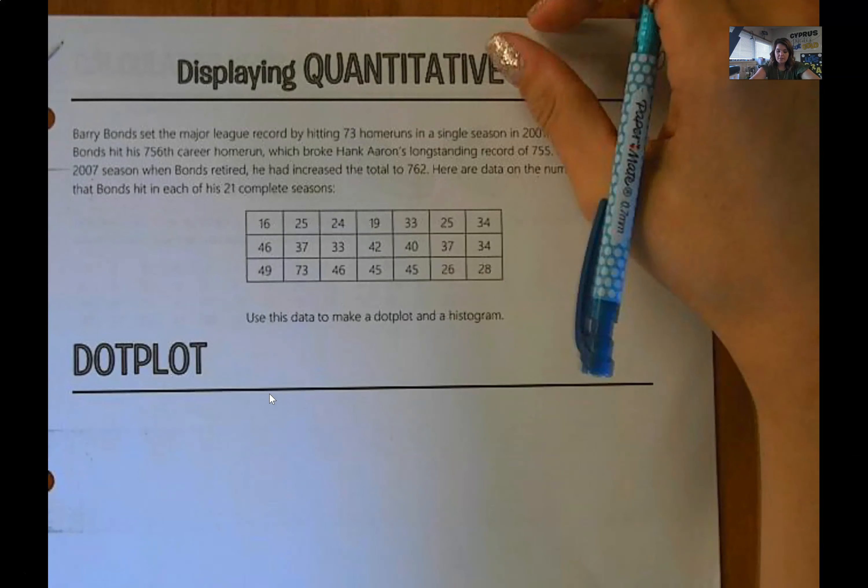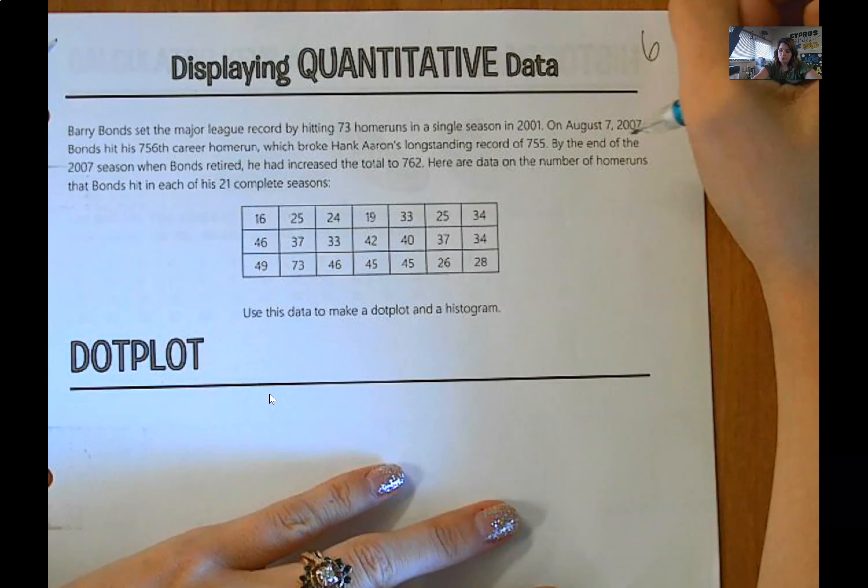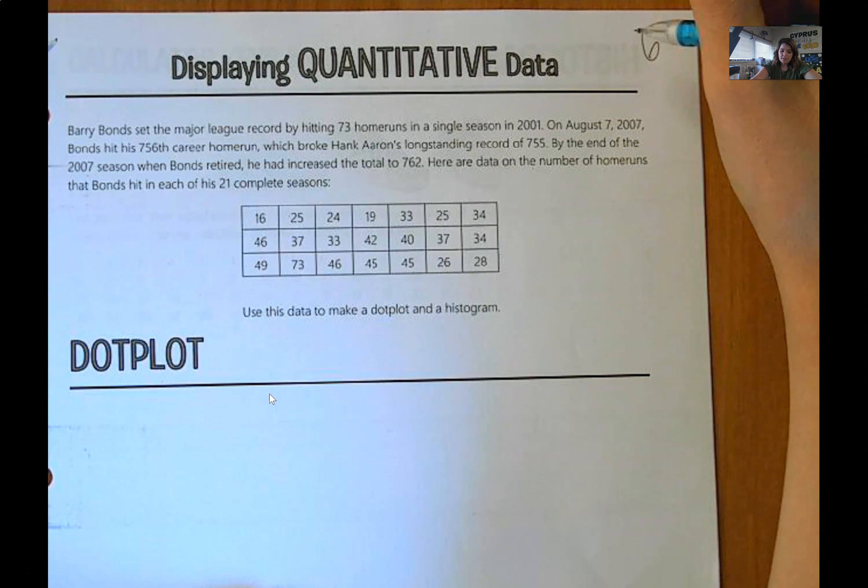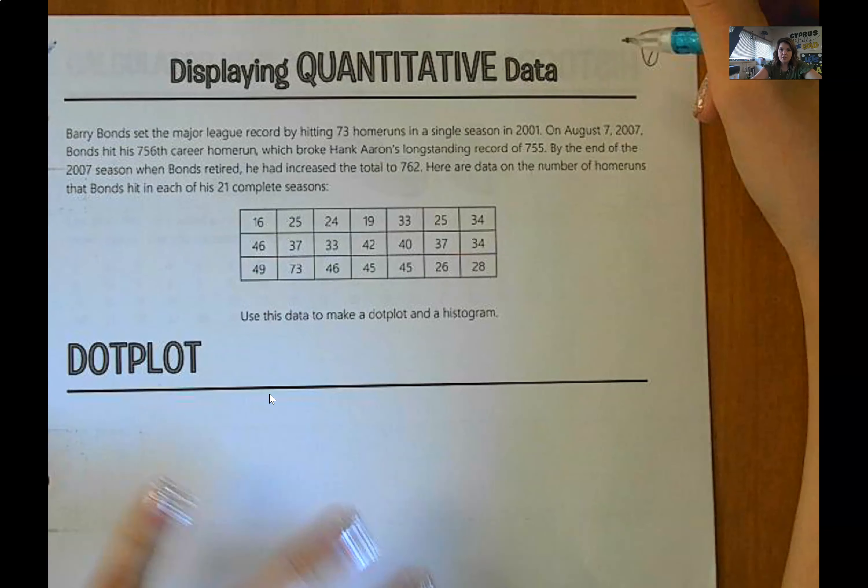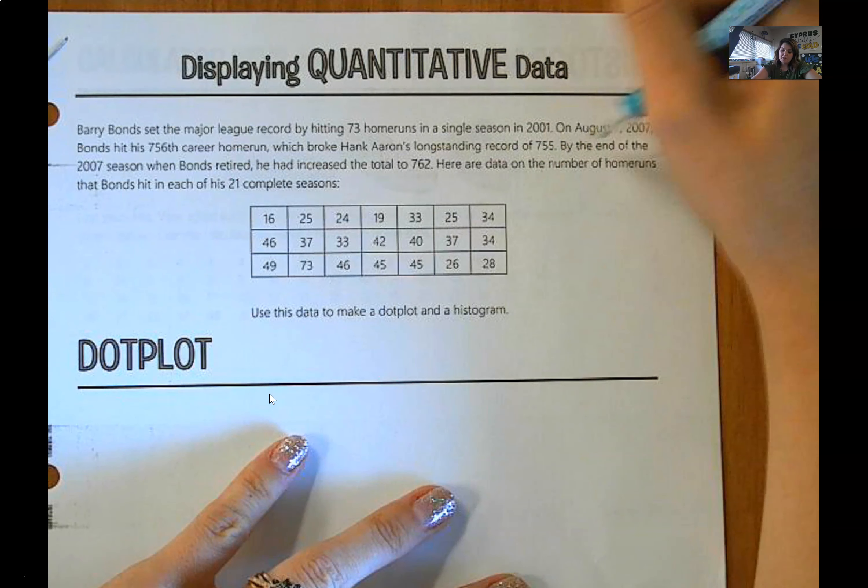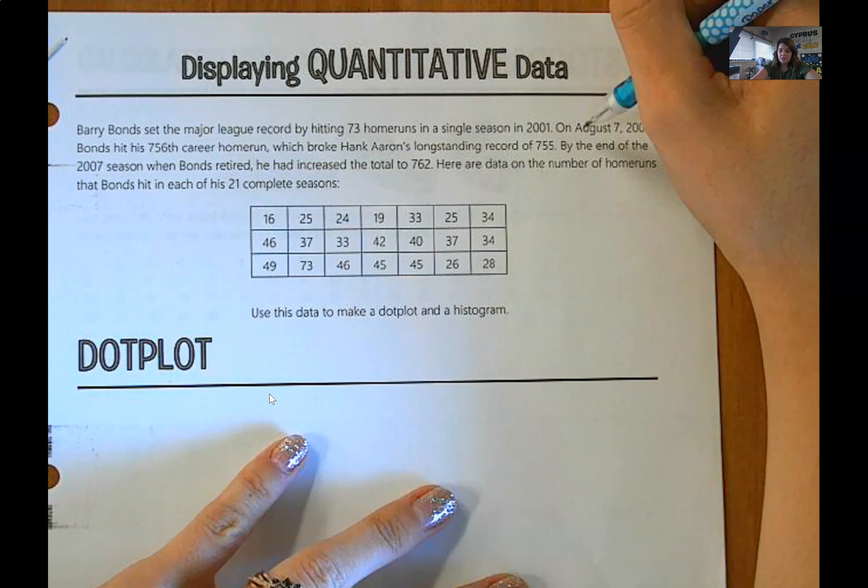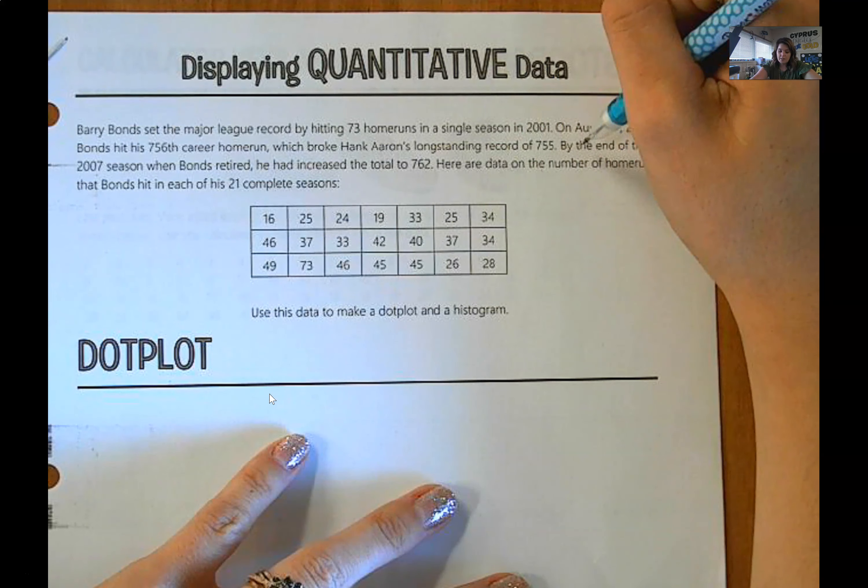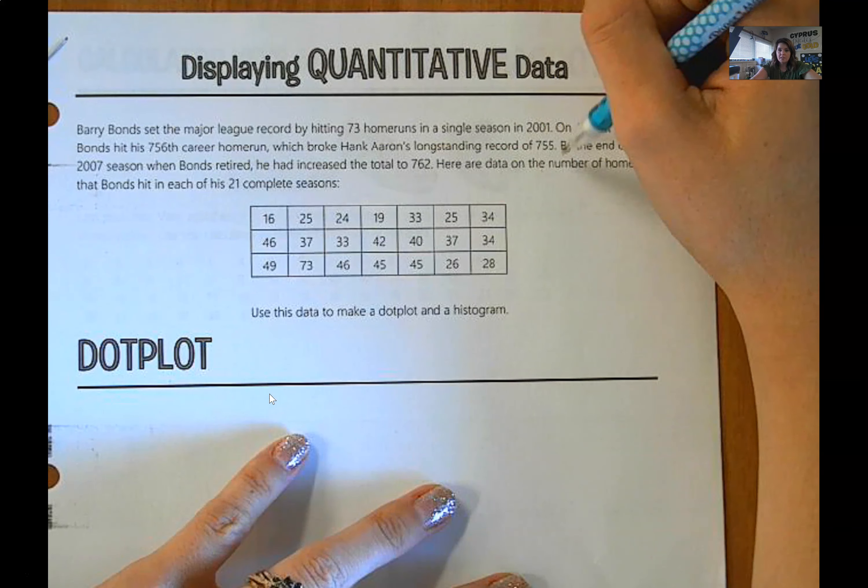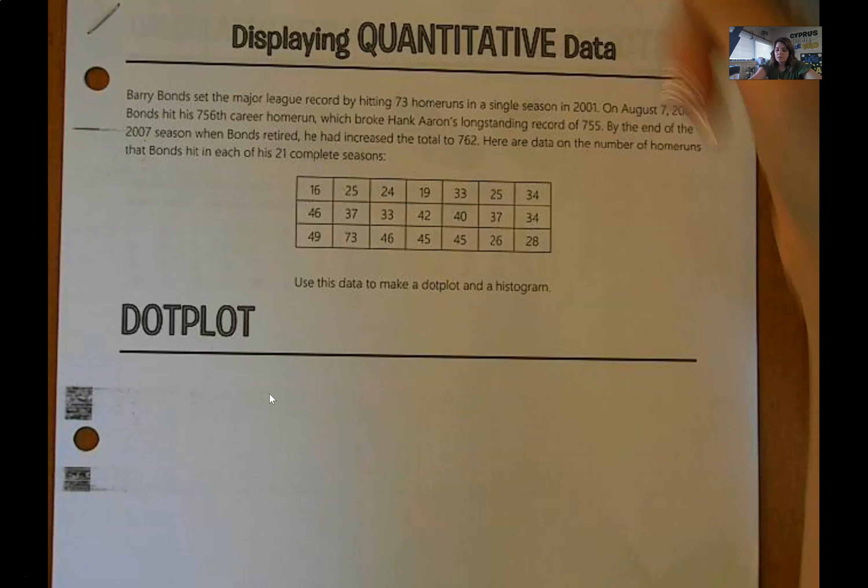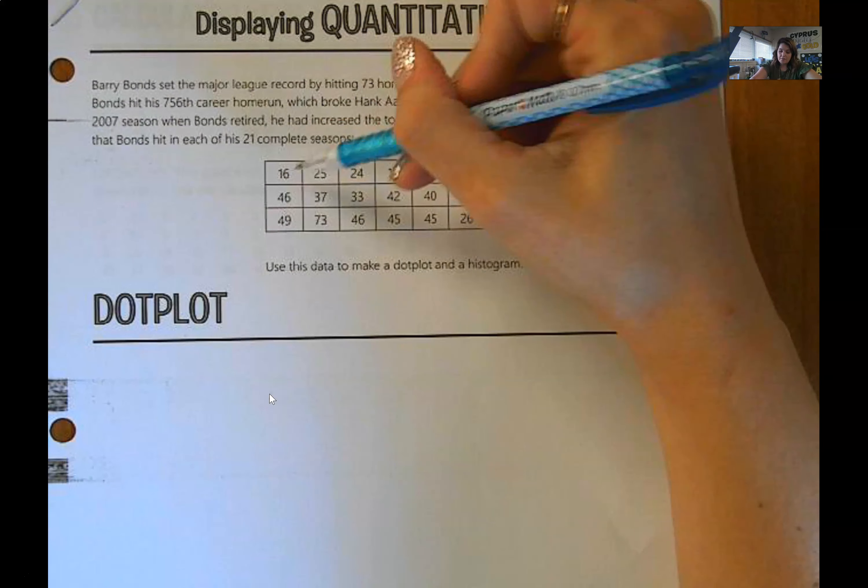So Barry Bonds set the major league record for hitting 73 home runs in a single season in 2001. On October 7, 2007, Bonds hit his 756th career home run. That broke Hank Aaron's long-standing record of 755. By the end of the 2007 season, when Bonds retired, he had increased the total to 762. Here are the data on the number of home runs that Bonds hit in each of his 21 complete seasons. Use this data to make a dot plot and a histogram. So on this page, we're just focusing on dot plots.